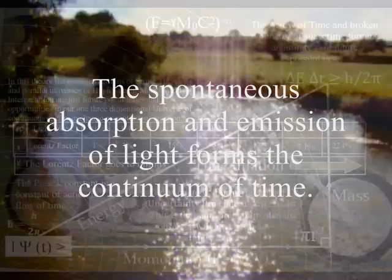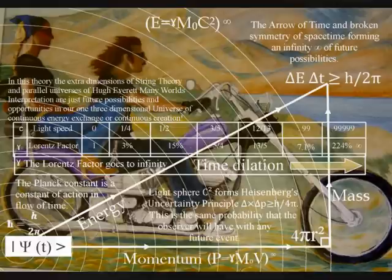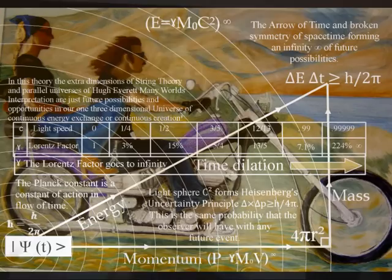Therefore, the uncertainty of quantum mechanics, known as Heisenberg's Uncertainty Principle, that is formed by the probability wave function is the same uncertainty we have with any future event within our own reference frame that we can interact with, creating a future relative to our actions.